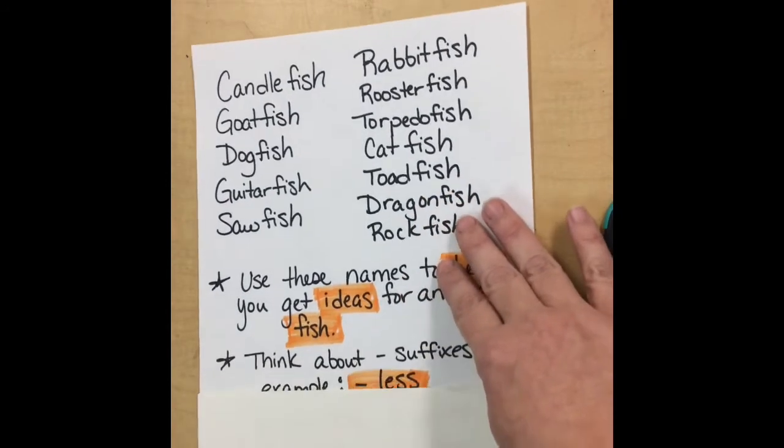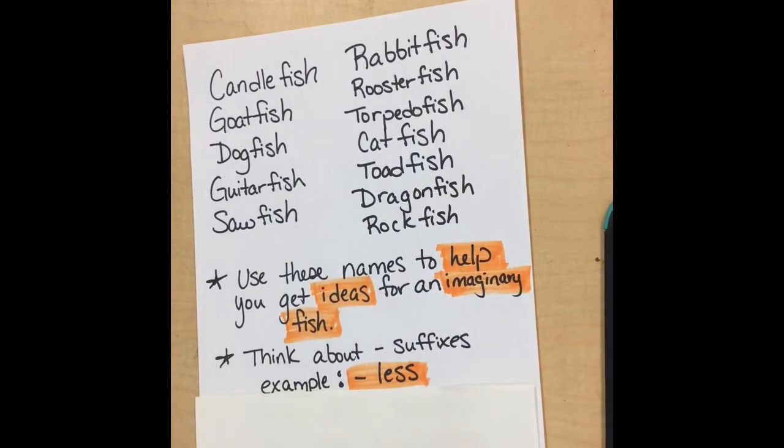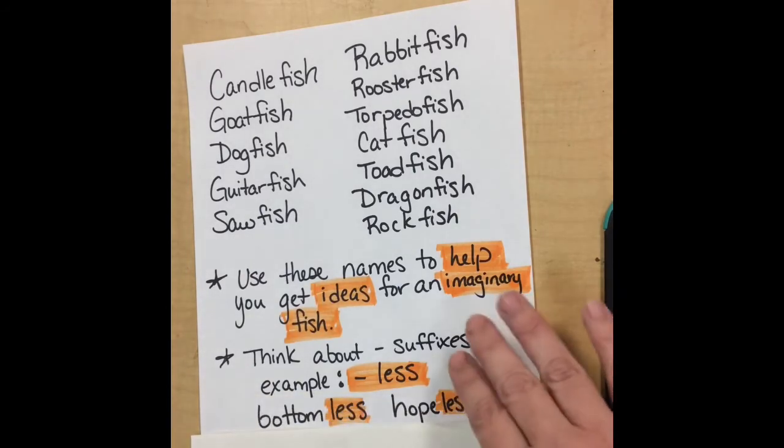So another way to think about this, we're going to think about suffixes. For the example, blank-less, like we can end words with less. So for example you could do bottomless, hopeless.